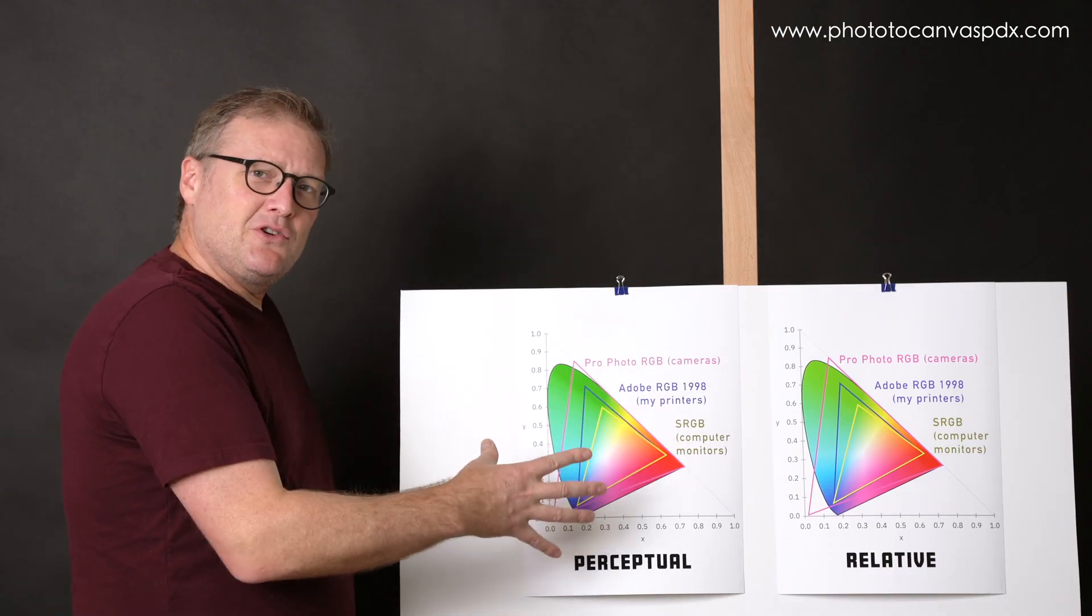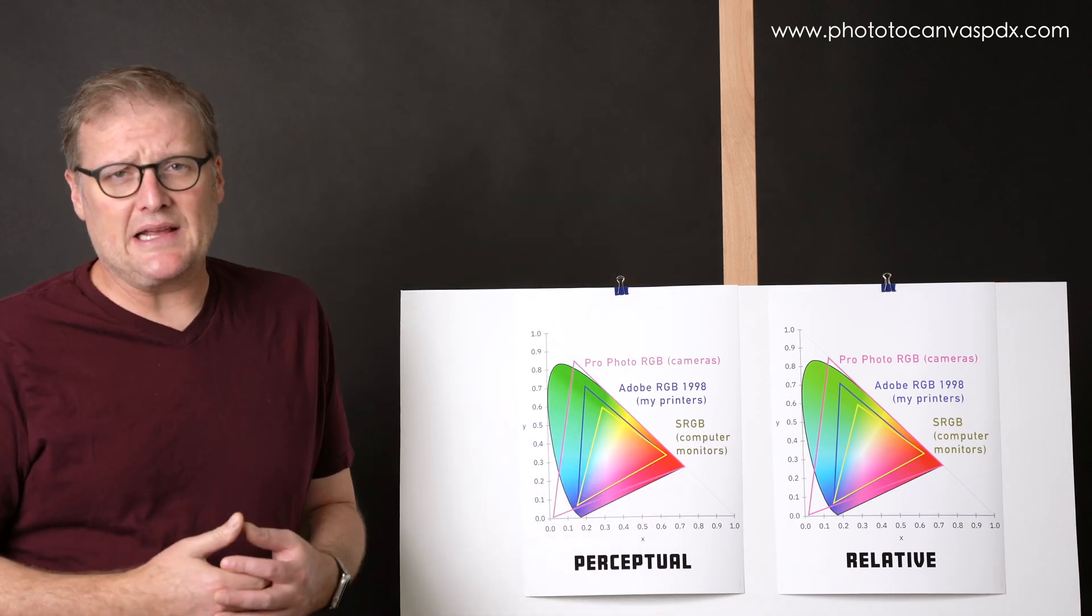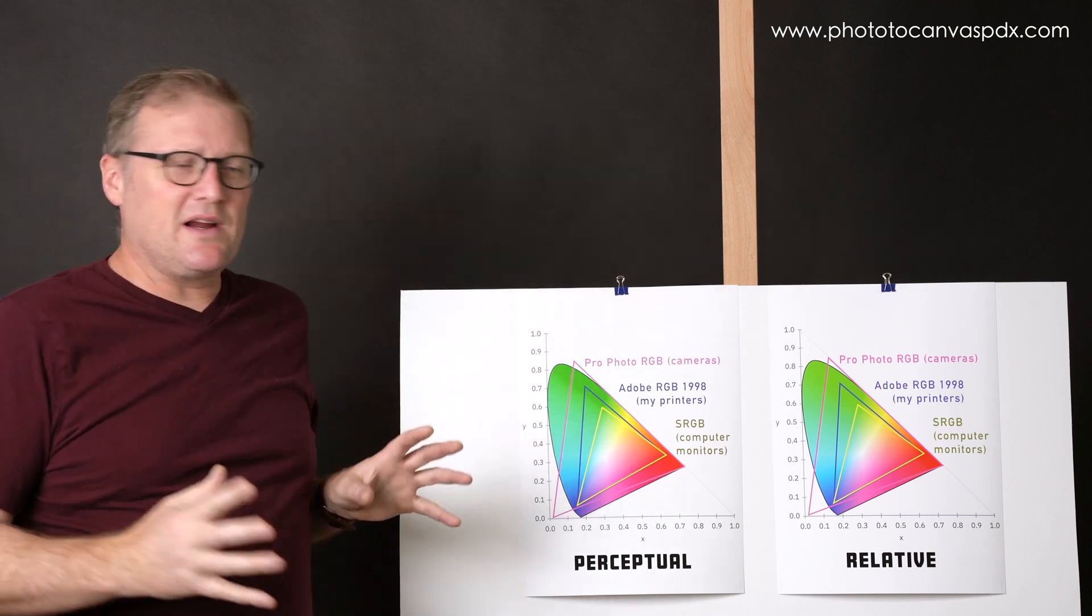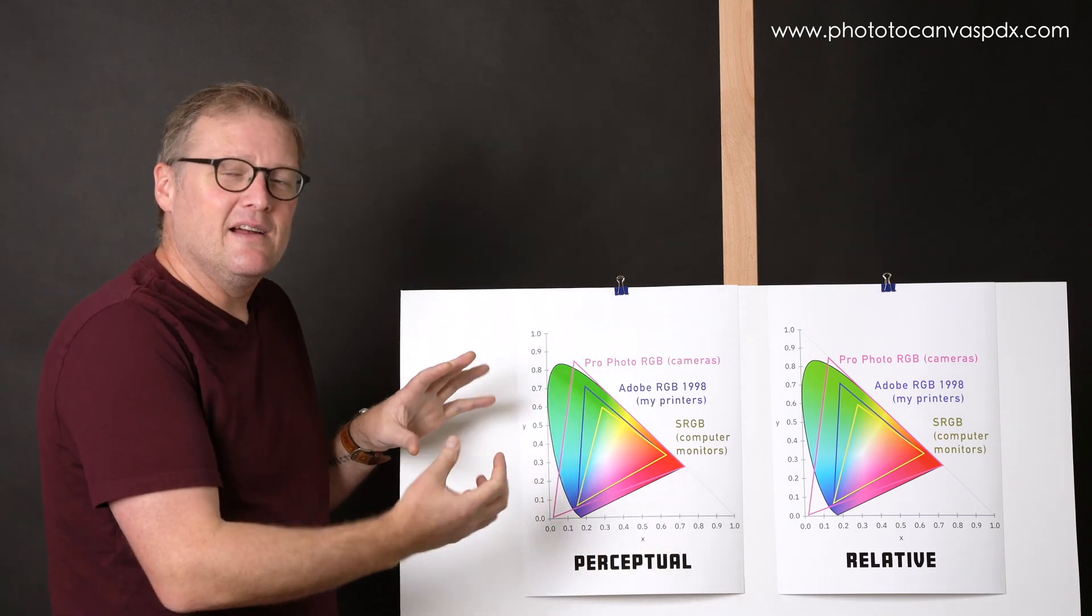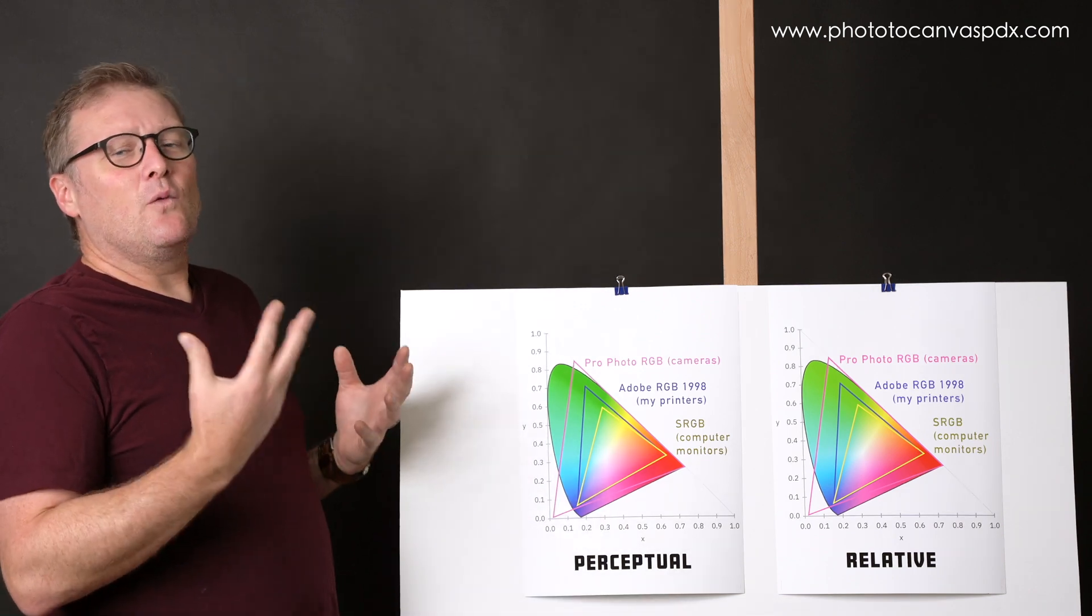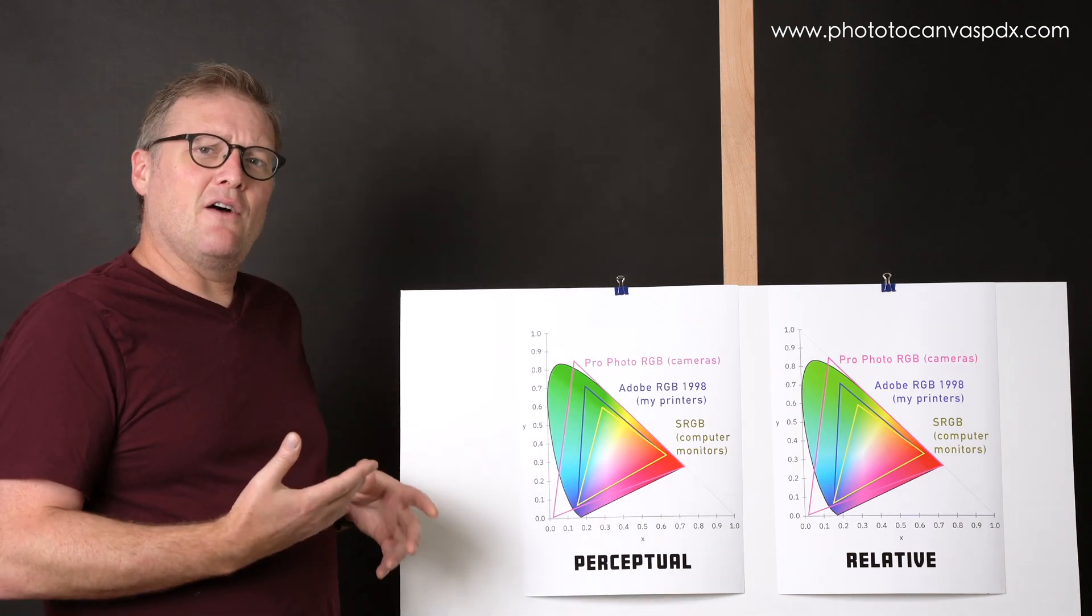So in perceptual, it's better if a lot of colors are out of gamut. And rather than having this funky stuff here and there that just looks weird, it's going to shift everything to make it all look right together collectively.